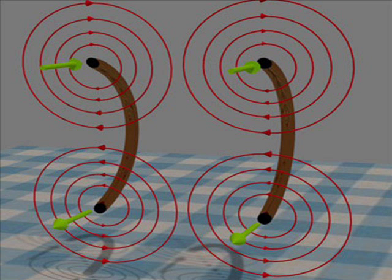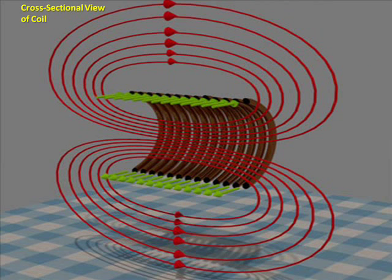However, since lines of flux cannot intersect, the flux lines for individual turns will distort to form complete flux loops around the whole coil as shown.